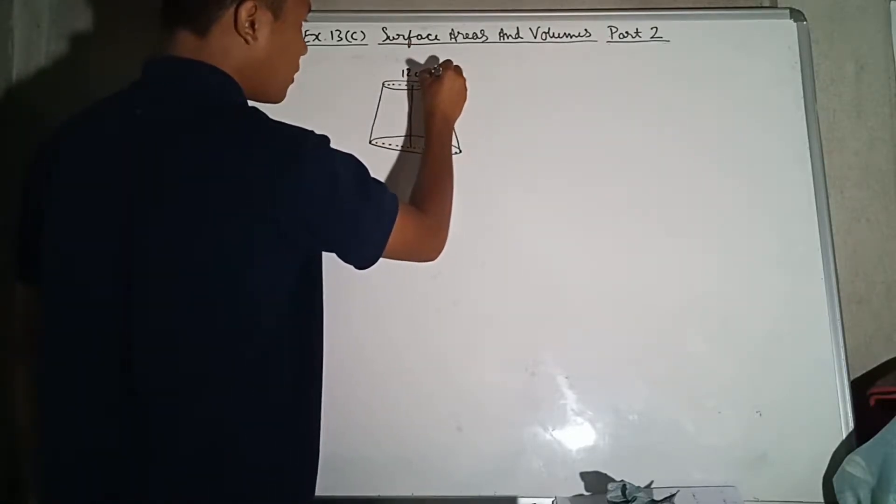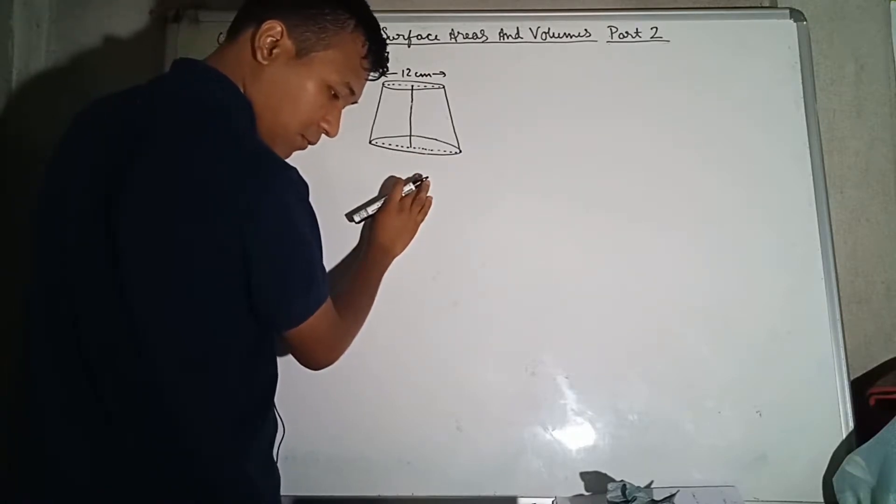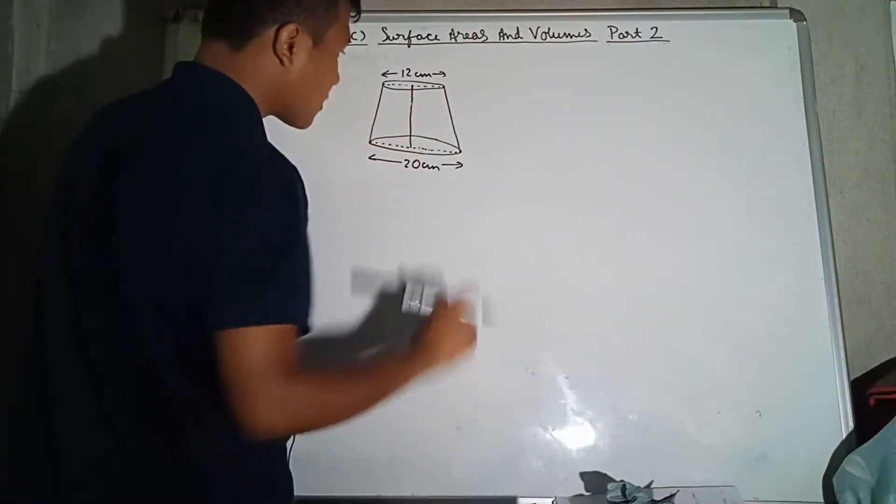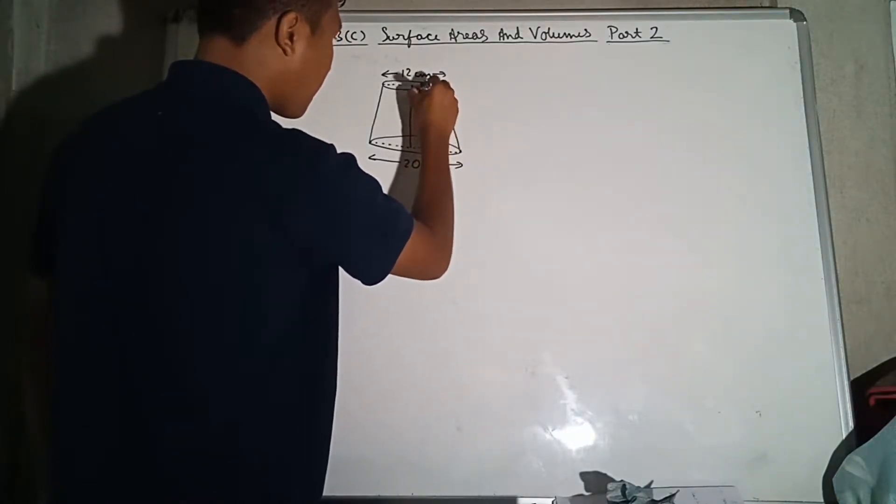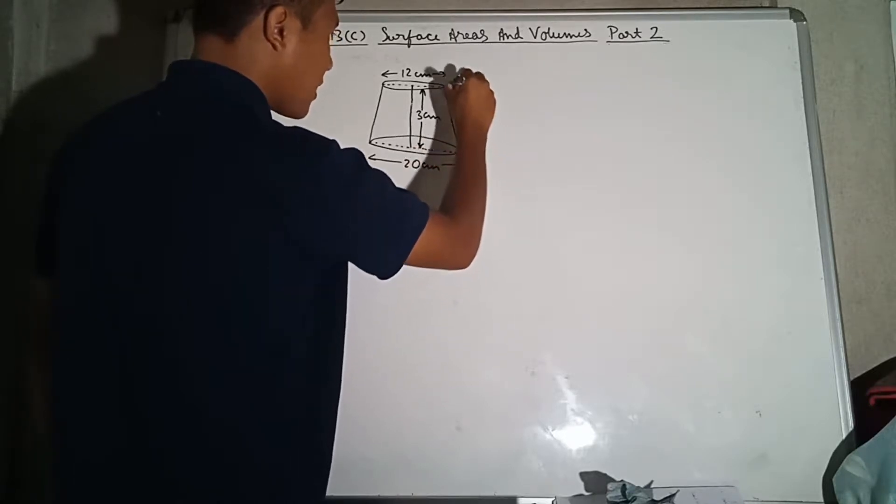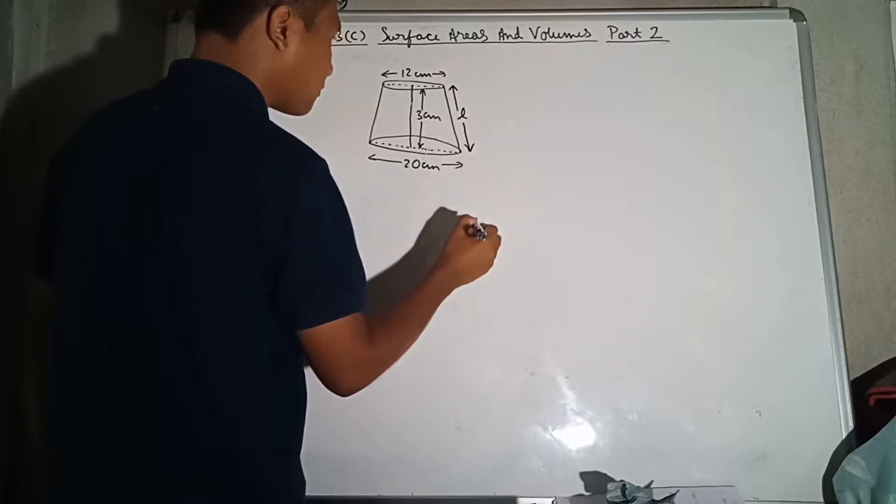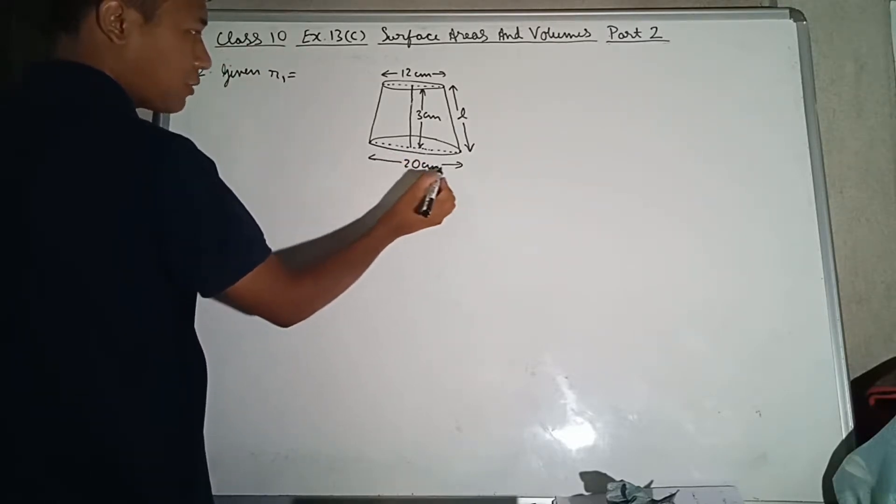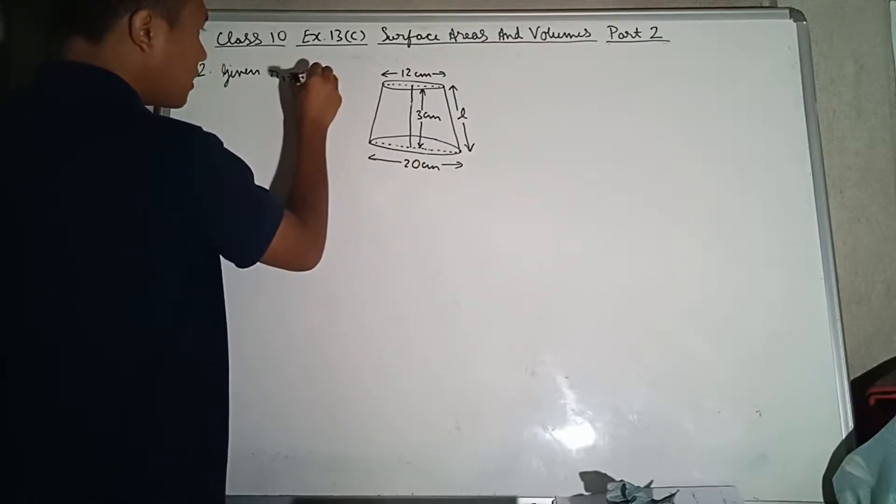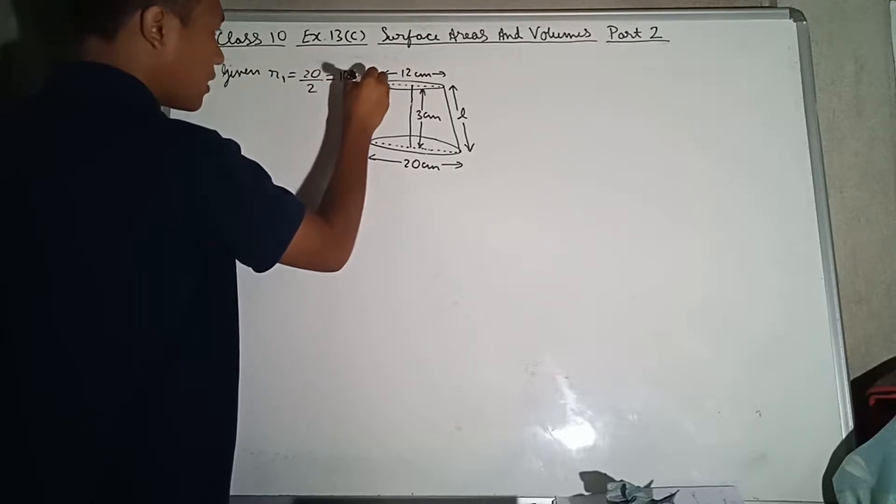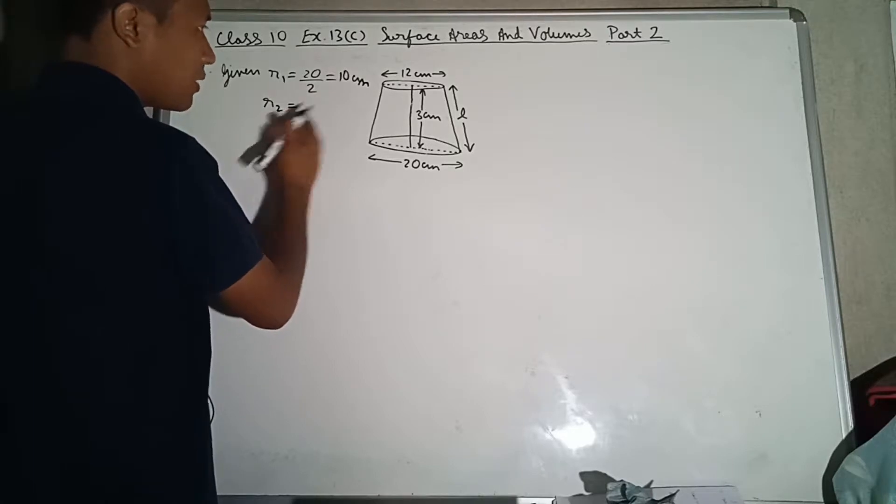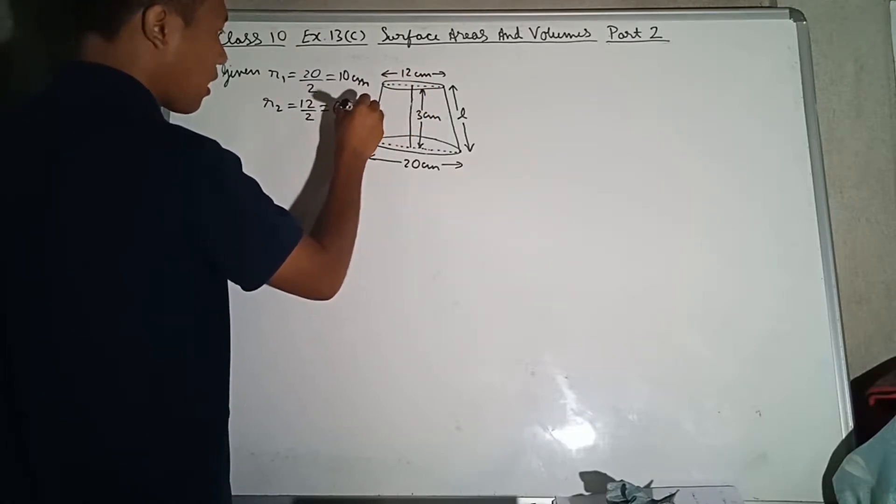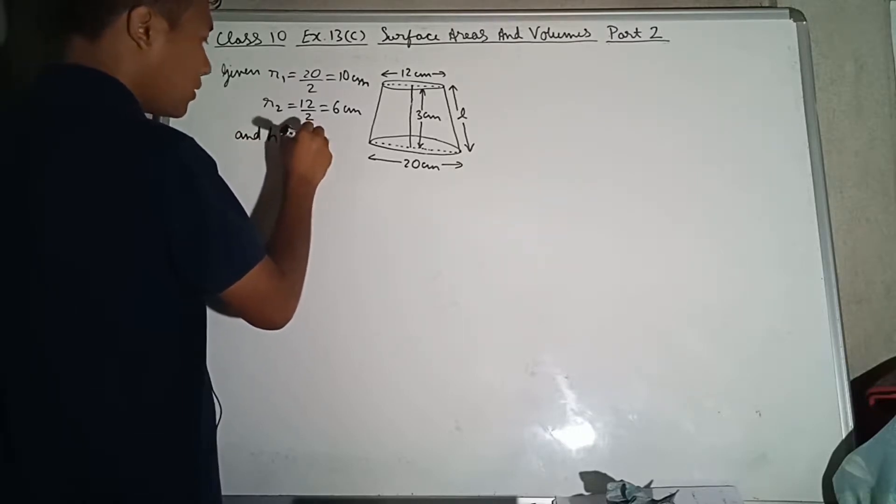Diameter is 12 centimeter, bottom diameter is 20 centimeter. Now height of frustum is 3 centimeter. The slant height L is not given. R1 is the radius of bigger circle, diameter is 20, so half of that is 20 by 2 equals 10 centimeter. R2 is the radius of smaller circle, diameter is 12, so half is 6 centimeter, and height of frustum is 3 centimeter.